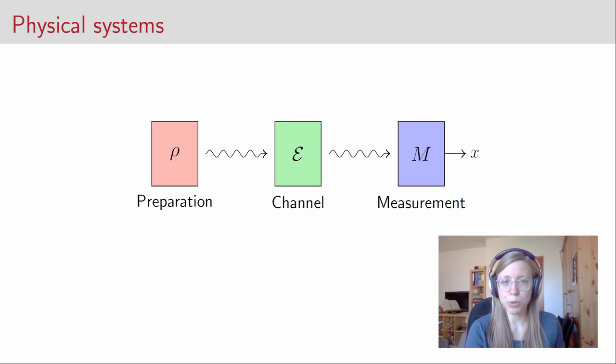Hello everyone and welcome to the second video about the security of quantum key distribution. In this video we want to develop a mathematical description of the physical systems and processes that appear in a quantum key distribution protocol. If you remember the BB84 protocol from last time, this includes the stage where Alice prepares states and where she sends them over to Bob, and the stage where Bob measures the states.